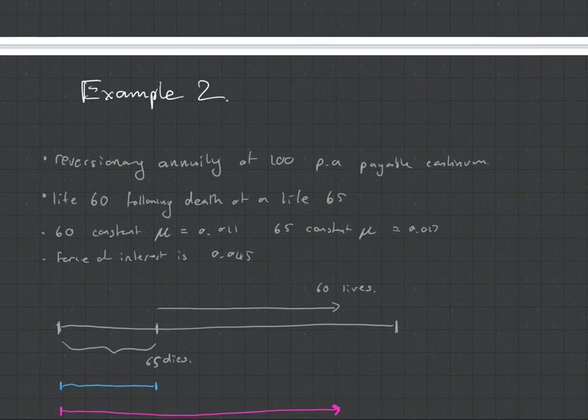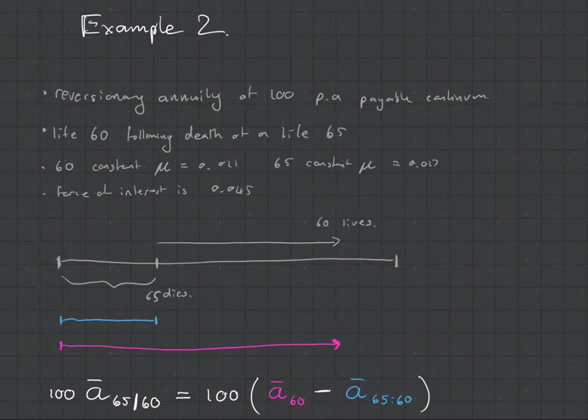Example number two is now with an annuity. The previous one was with an assurance. So assurances are normally easier. But with an annuity, we've got, it's 100 payable continuously to a life 60 following the death of a life 365. And that gives you the forces of mortality and interest. So this is our timeline.